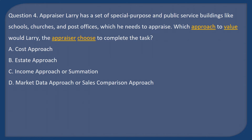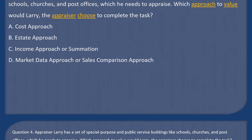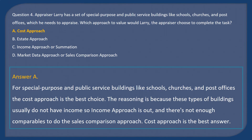Question 4: Appraiser Larry has a set of special purpose and public service buildings — like schools, churches, and post offices — which he needs to appraise. Which approach to value should Larry choose? A. Cost approach. B. Estate approach. C. Income approach or summation. D. Market data approach or sales comparison approach. Answer: A. For special purpose and public service buildings, the cost approach is the best choice. These types of buildings usually do not have income, so the income approach is out, and there aren't enough comparables for the sales comparison approach.